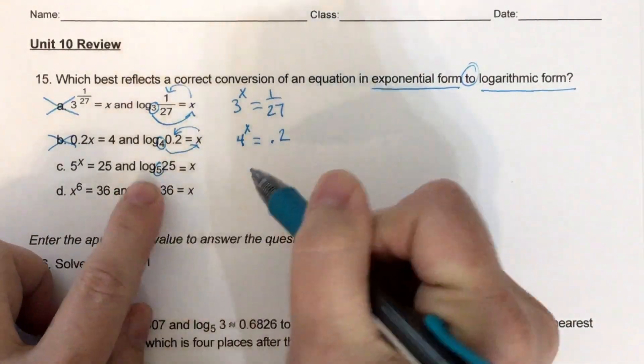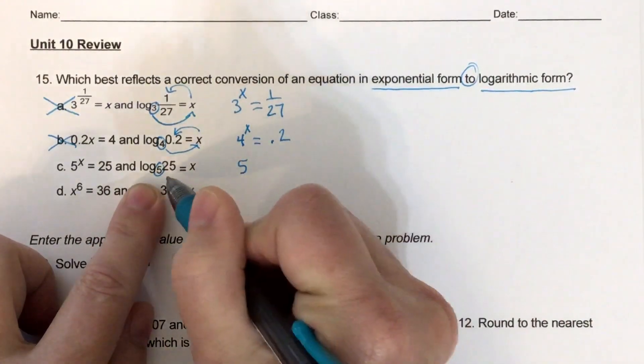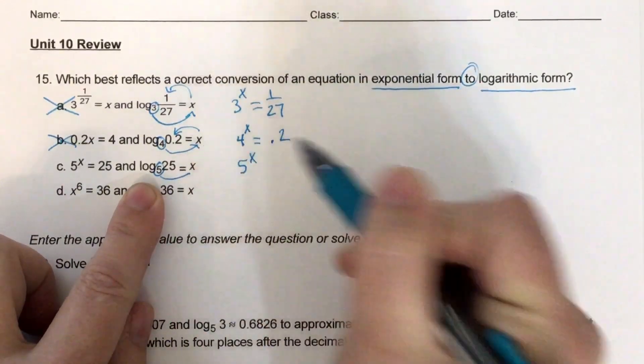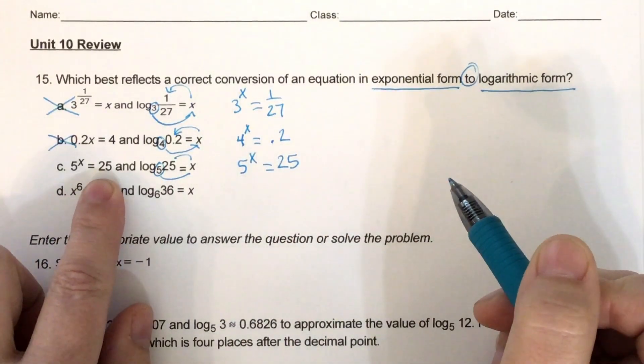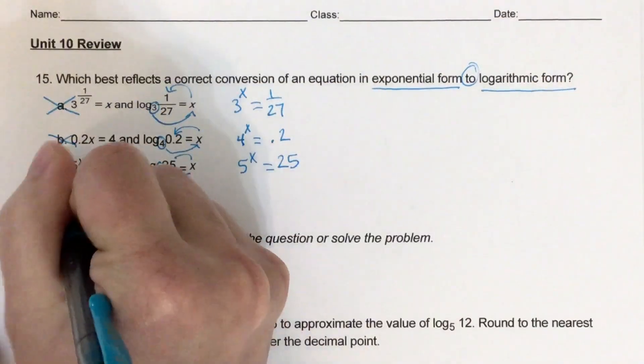Okay, C, I start with 5, raise it to the x, and that should equal 25. And that's exactly what that says, so C is my winner.